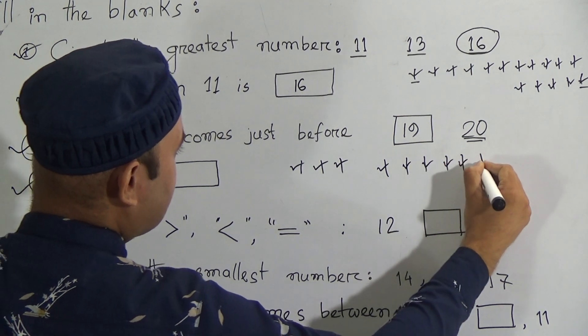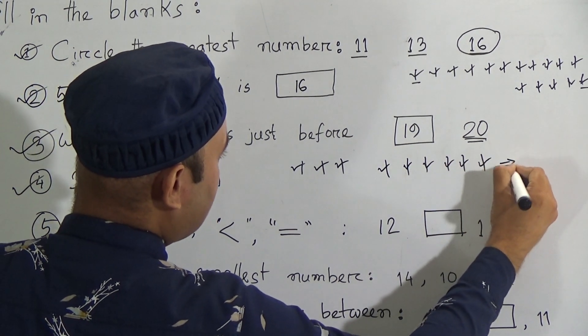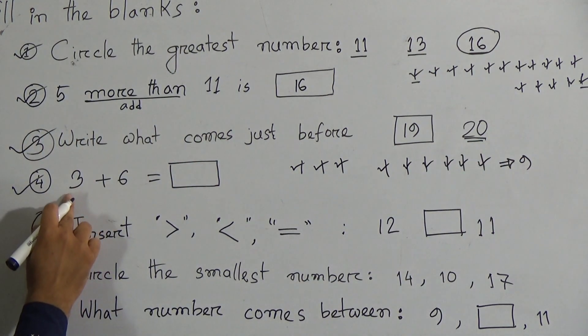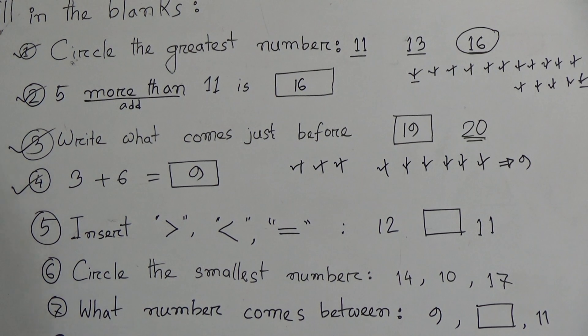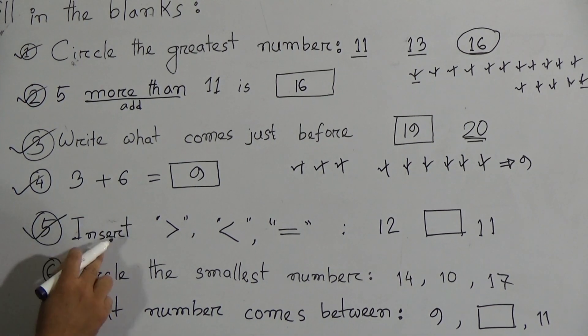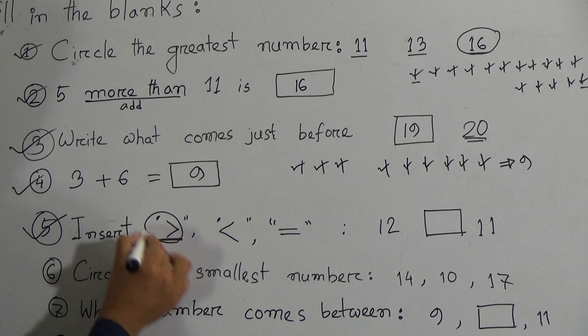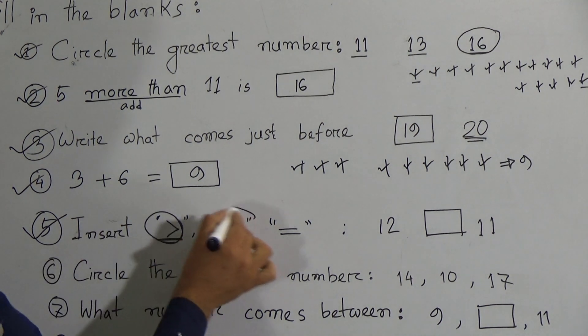One, two, three, four, five, six, seven, eight, and nine. That means there are nine sticks. So three plus six, it will be nine. Then number five: insert. Do you know, my dear students, which symbol this is? This is greater than sign.